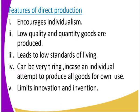Number four: it can be very tiring if an individual attempts to produce all goods for their own use. For example, you cultivate maize, beans, greens, cabbages, make your own oil, build your own house — all of this is expensive and tiring, since you produce everything you need without relying on buying. Number five: it limits innovation and invention, as you cannot think outside the box.